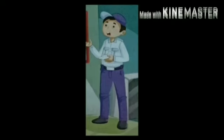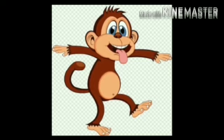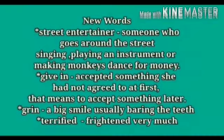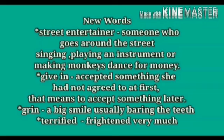Now let us see some new words and difficult words from page number two and three. First new word: 'street entertainer' — its meaning is someone who goes around the streets singing, playing an instrument, or making monkeys dance for money. Next, 'gave in' — its meaning is accepted something she had not agreed to at first, that means to accept something later. Next word, 'grin' — its meaning is a big smile, usually bearing the teeth. Next, 'terrified' — its meaning is frightened very much.